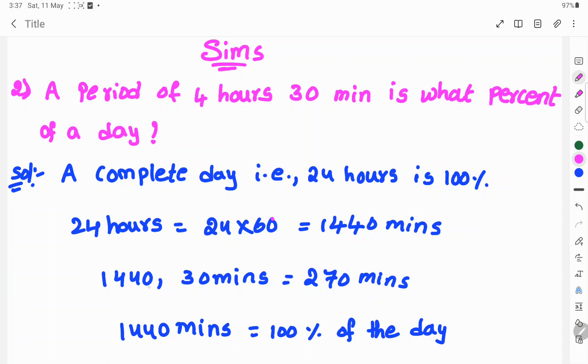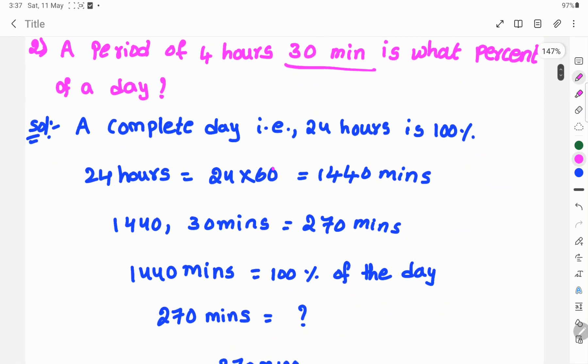1440 again, how much? This is 4 hours. Here, extra 30 minutes. So 4 hours 30 minutes is equal to 270 minutes.